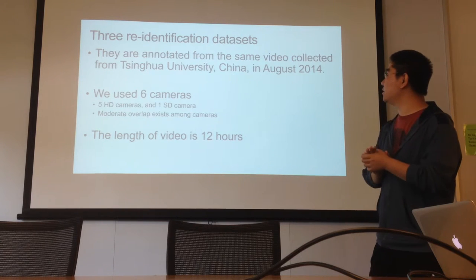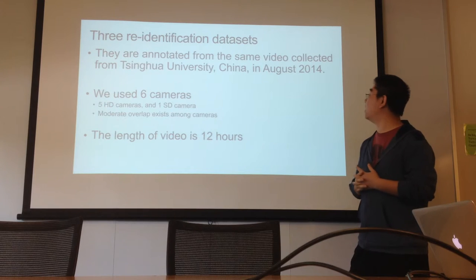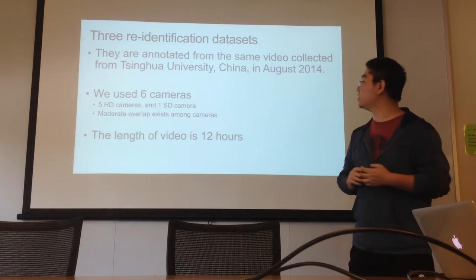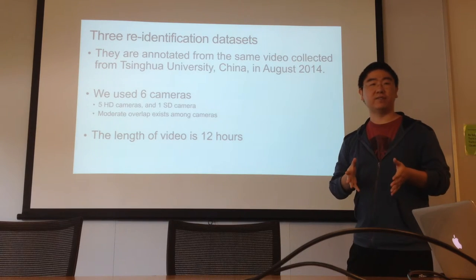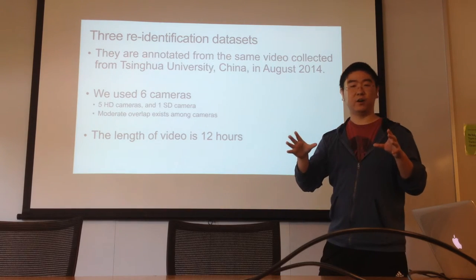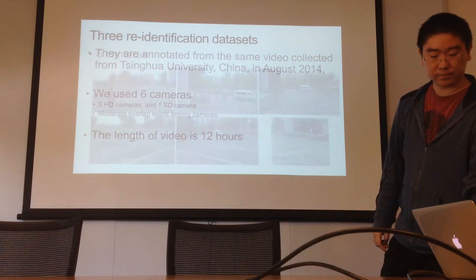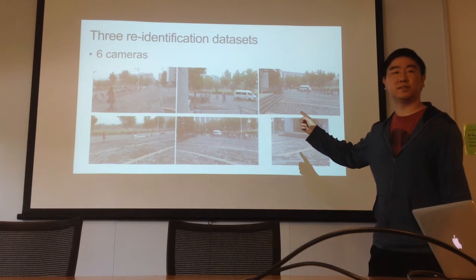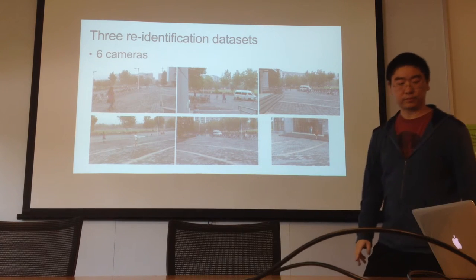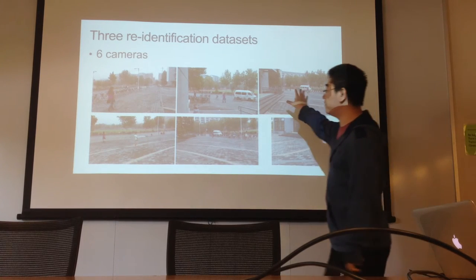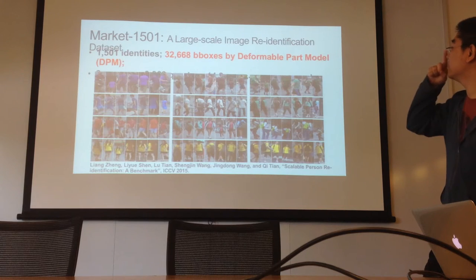I will introduce three re-identification datasets. All datasets are annotated from the same video collected from Tsinghua University in August 2014. We have six cameras — five are HD cameras and one is an SD camera. Among these cameras, they have some moderate overlap in viewpoint, but are always oriented at the same scene. The length of video is 12 hours. These are six images from the six cameras — they shoot at the same scene and have some overlap in viewpoint. These are static cameras.